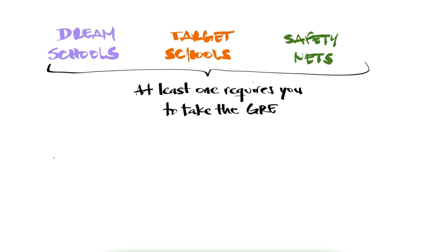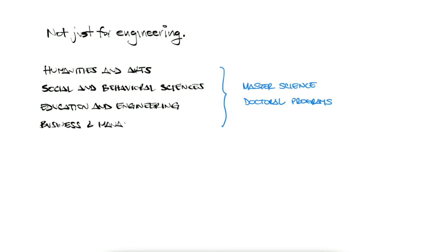The GRE is not just required for graduate programs in engineering. From humanities and arts and social and behavioral sciences to education and engineering, many masters and PhD programs require you to take the GRE. Even some business degrees will take the GRE scores as an alternative to the GMAT, so make sure to check if your MBA program would take the GRE as it is a relatively easier exam.